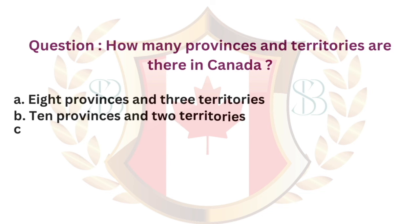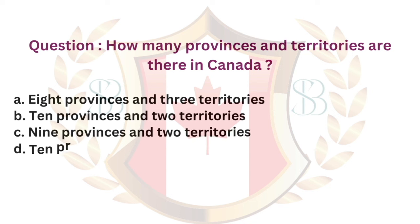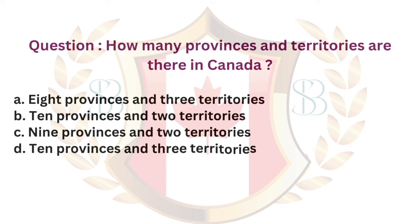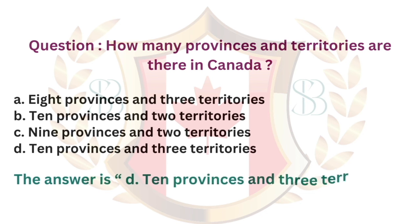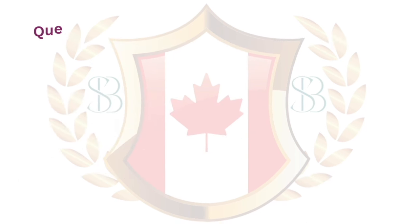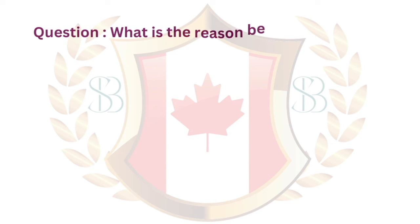Question. How many provinces and territories are there in Canada? a. 8 provinces and 3 territories. b. 10 provinces and 2 territories. c. 9 provinces and 2 territories. d. 10 provinces and 3 territories. The answer is d. 10 provinces and 3 territories.